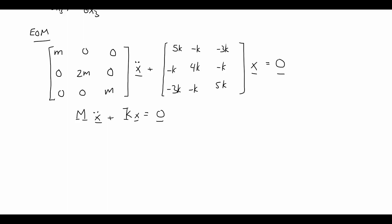Before proceeding, let's verify the modeling step by checking that M and K are symmetric — required for linear systems. The mass matrix is diagonal, so it's automatically symmetric. For K, checking the off-diagonals: negative k appears symmetrically, as does negative 3k. K is also symmetric, so we can proceed. If either matrix were not symmetric, we would need to recheck the equations.